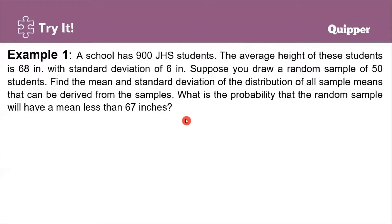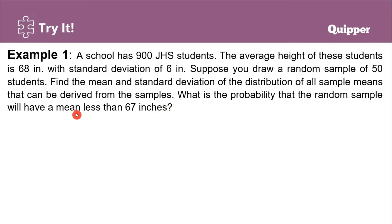Let's try our first example. A school has 900 junior high school students. The average height of these students is 68 inches with a standard deviation of 6 inches. Suppose you draw a random sample of 50 students. Find the mean and the standard deviation of the distribution of all sample means. What is the probability that the random sample will have a mean less than 67 inches?